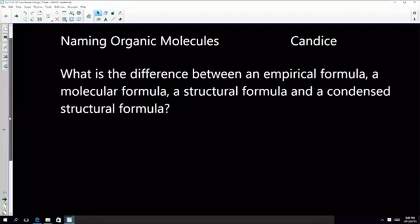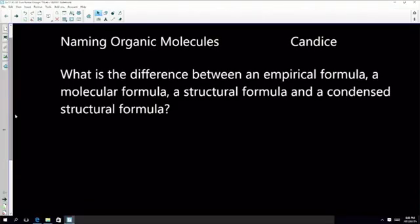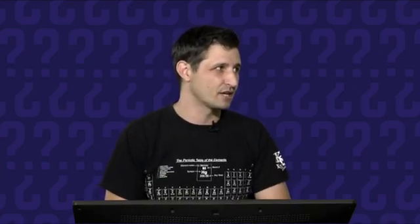Okay, so Candice has sent in a beautiful question, just to get us off the ground. So, when we're starting to name organic chemistry, it's very important that we've got some of the language right, and the language, let's be honest, is a little bit tricky. Now, last week, I gave you a little bit of outdated information. I told you that there were like 35 million organic chemicals.